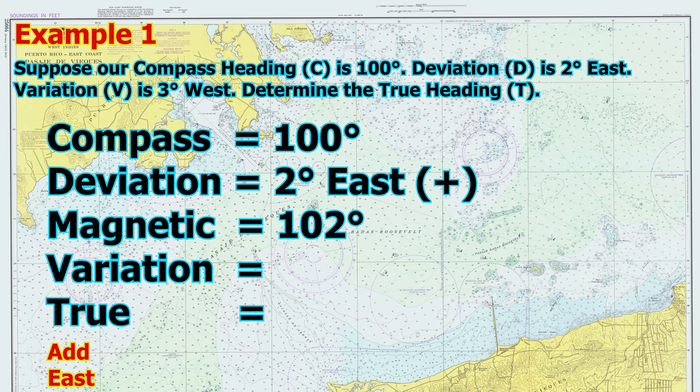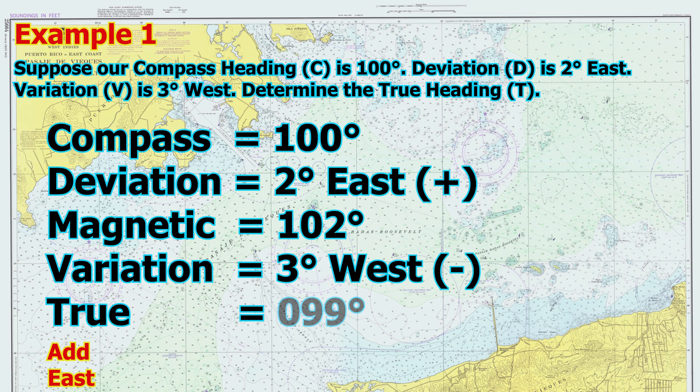Step 2, apply variation: magnetic 102 minus 3 west equals true 099. So the true heading is 099 degrees.